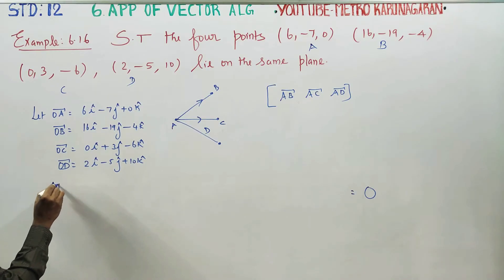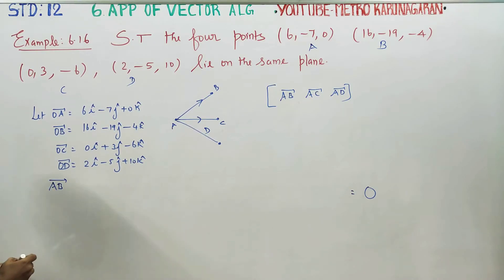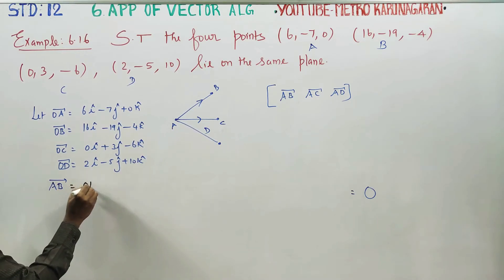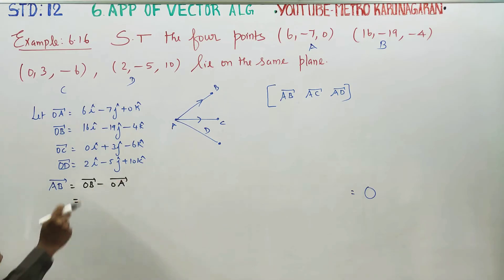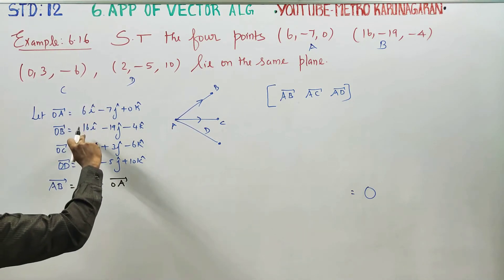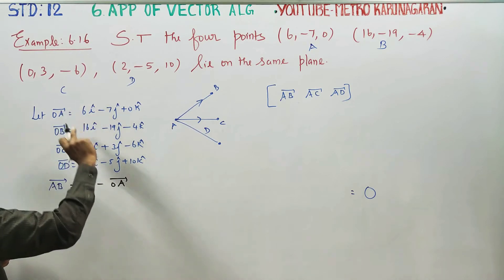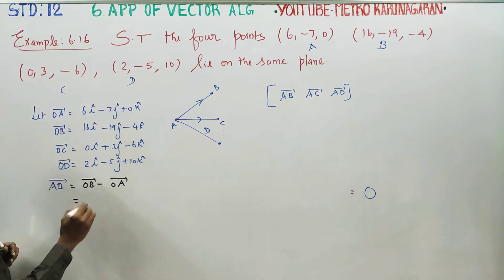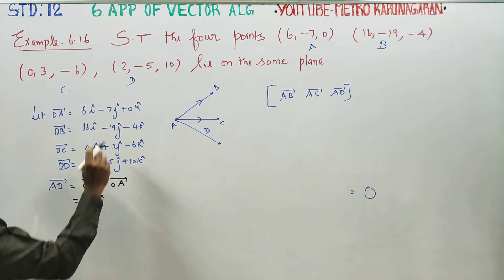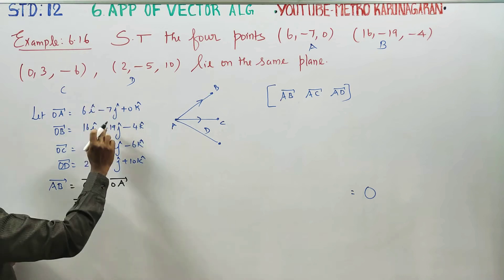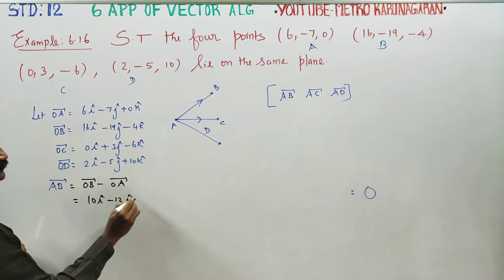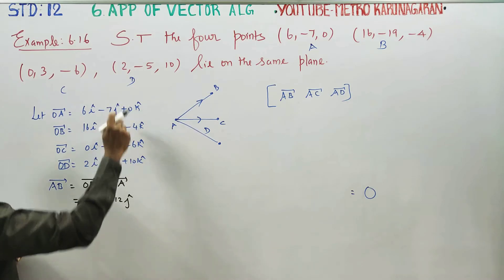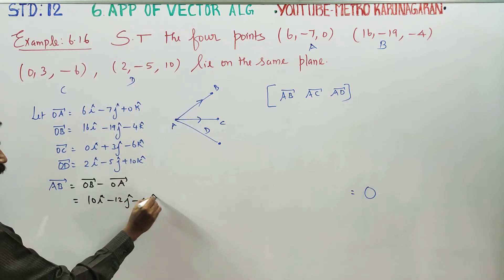First, I have to find AB vector. AB vector is equal to OB minus OA. That is: 16 minus 6 = 10i; minus 19 plus 7 = minus 12j; minus 4 minus 0 = minus 4k. So AB vector is 10i minus 12j minus 4k.